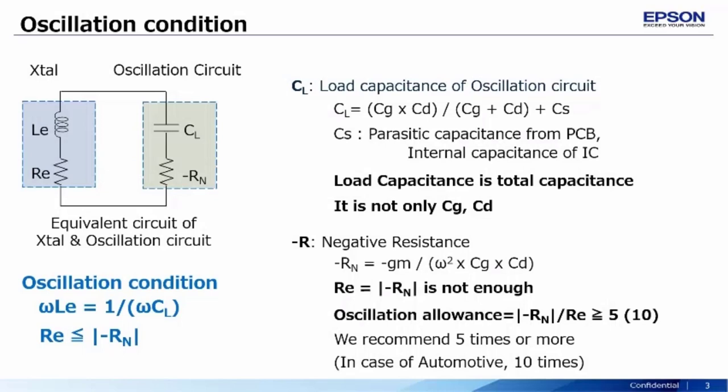For sustained oscillations to occur, two conditions must be met. The closed-loop gain must be equal to unity, and the closed-loop phase is equal to zero, or an integral of 2nπ. The oscillation conditions then translate to the equations shown here.